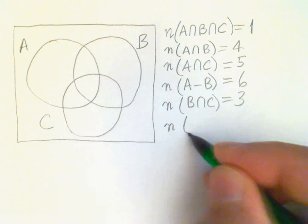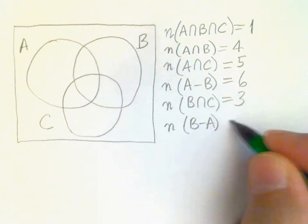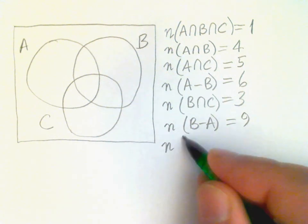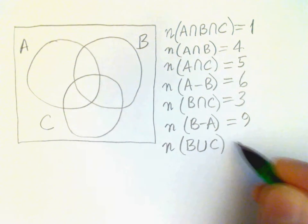The number in the set difference B minus A is 9. And the number in the union B union C is 22.